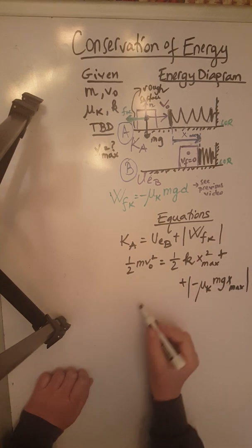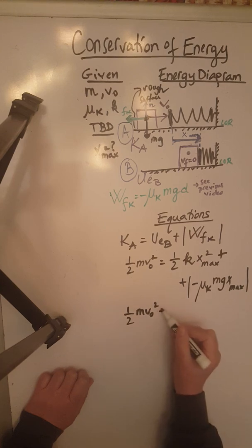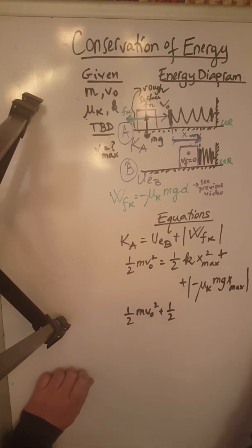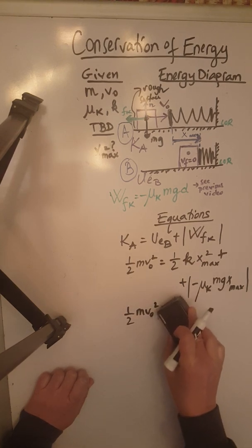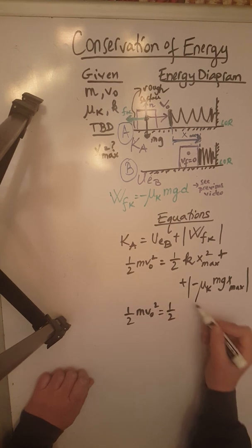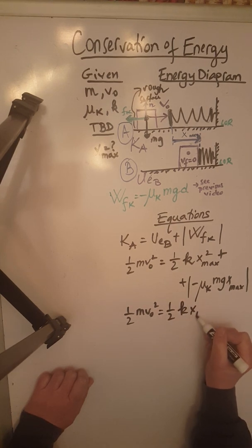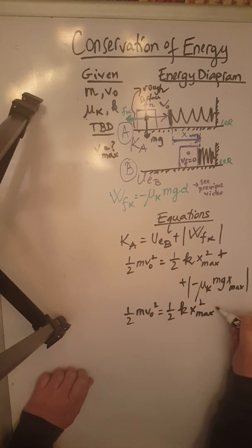So when we simplify this we have 1 half M V naught squared equals 1 half K x max squared